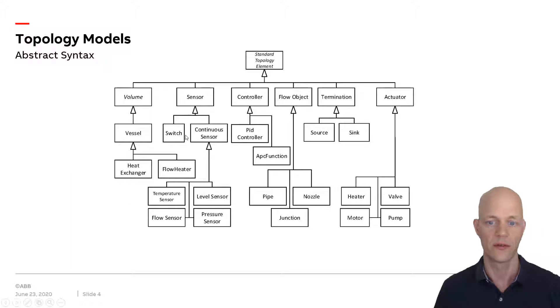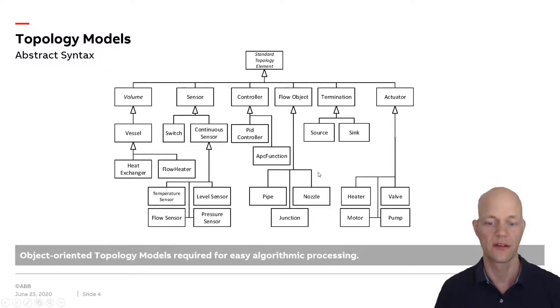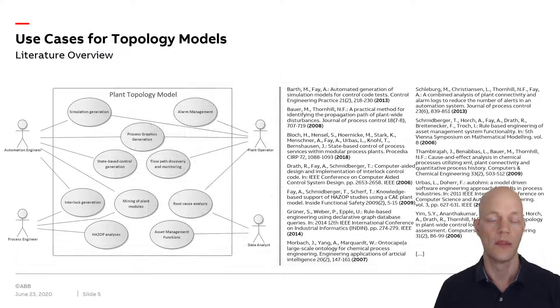You see sensors, controllers, flow objects like pipes and junctions, actuators which include valves, motors, and pumps. If you have such a representation, then we can do a lot of different use cases. There are many use cases for topology models which have been tackled in literature.